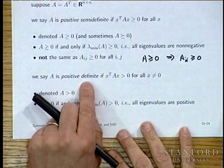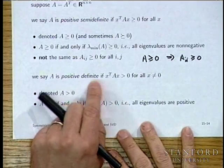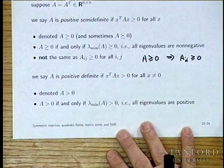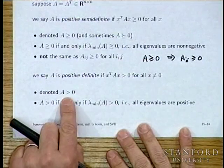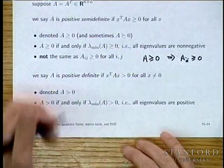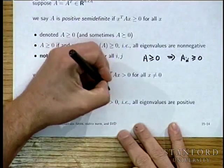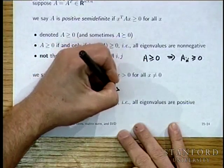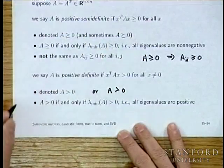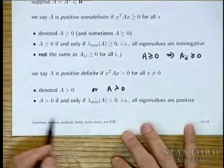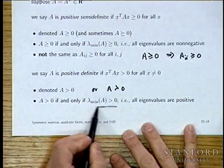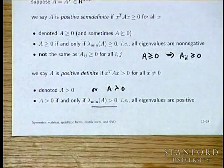A matrix is positive definite if X transpose AX is greater than zero for all x non-zero, denoted A > 0. This is equivalent to the minimum eigenvalue being strictly positive.